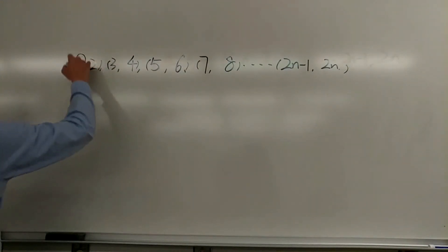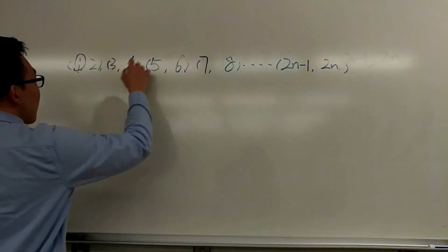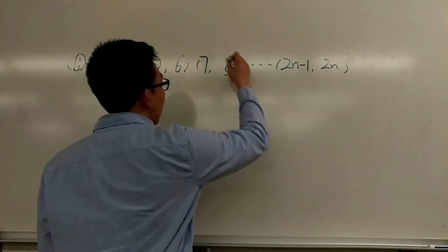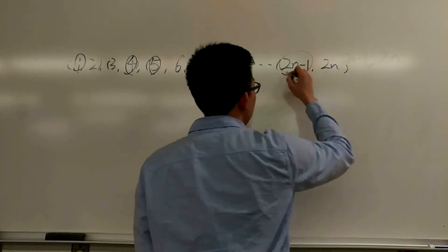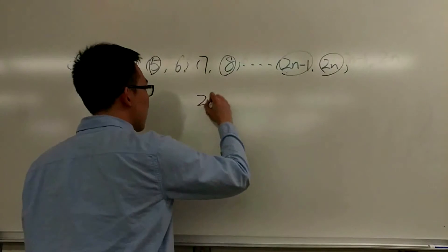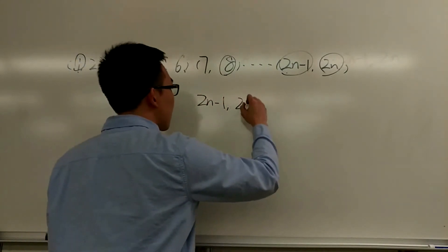So we can pick one here, pick four, pick five, pick eight, and then we pick two N minus one and two N. As we can see, two N minus one and two N are apparently relatively prime.